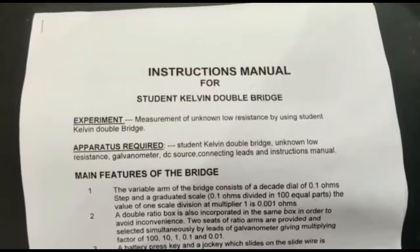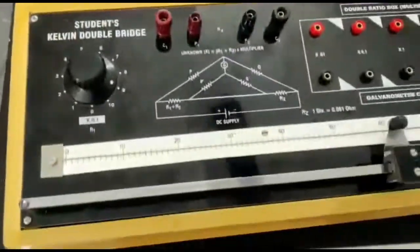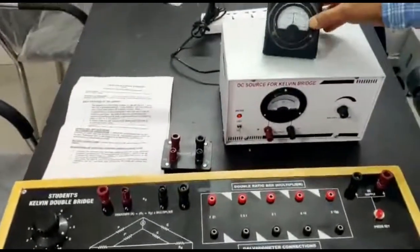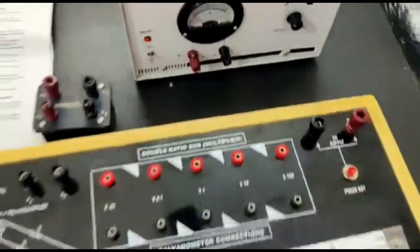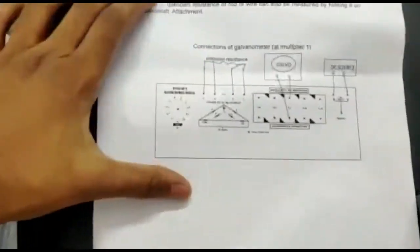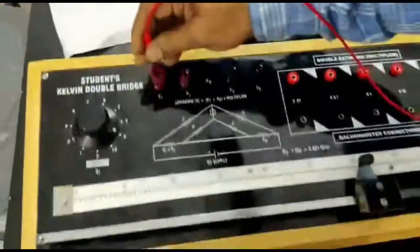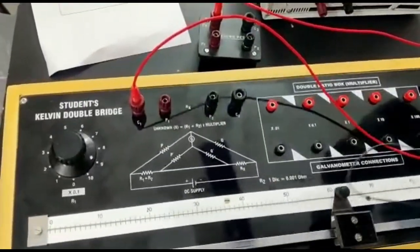This demonstrates measurement of unknown low resistance using a Kelvin double bridge. All required accessories are provided: the ammeter, four-terminal unknown resistance, and DC source. Make the connection as shown in the figure. Connect the four-terminal unknown resistance.